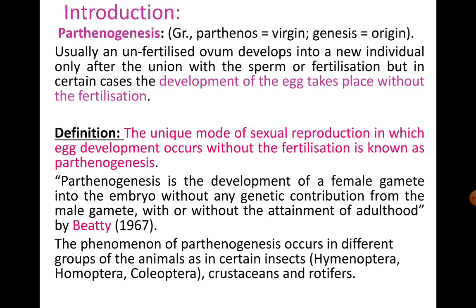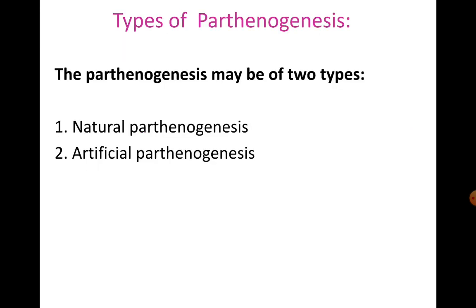This phenomenon of Parthenogenesis occurs in different groups of animals such as insects, crustaceans, and rotifers. Parthenogenesis can be of two types: Natural Parthenogenesis and Artificial Parthenogenesis. Natural Parthenogenesis occurs in nature, whereas Artificial Parthenogenesis can be induced using either physical or chemical means.